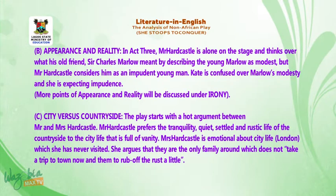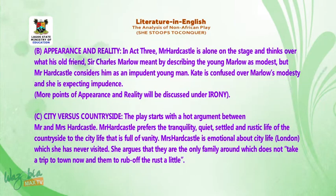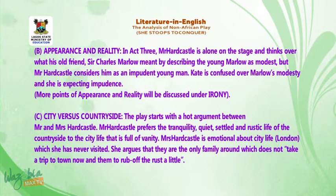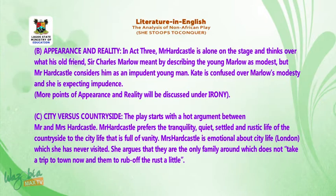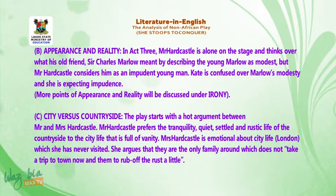Theme C: City versus Countryside. The play starts with a hot argument between Mr. and Mrs. Hardcastle. Mr. Hardcastle prefers the tranquility, quiet, settled and rustic life of the countryside over the city life that is full of vanity. Mrs. Hardcastle is emotional about city life — London — which she has never visited. She argues that they are the only family around which does not take a trip to town now and then to 'rub off the rust a little.'